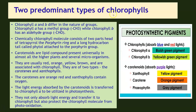There are two predominant types of chlorophylls. Chlorophyll A and B differ in the nature of their groups — chlorophyll A has a methyl group (CH3), while chlorophyll B has an aldehyde group (CHO). Chemically, the chlorophyll molecule consists of two parts: a tetrapyrrole porphyrin ring, and a long hydrocarbon tail called phytol attached to the porphyrin group.